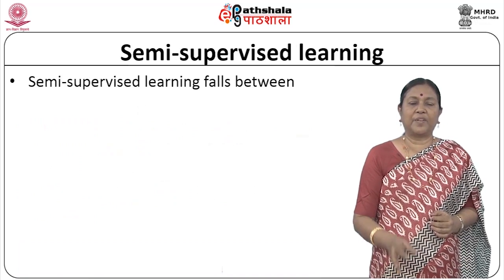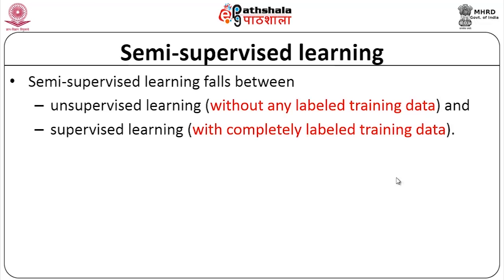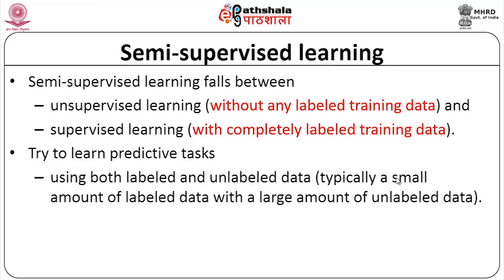Semi-supervised learning falls between unsupervised learning, where we have no labeled training data at all, and supervised learning, where we have completely labeled training data — meaning the training data is sufficient to determine the label. When we try to learn predictive tasks using both labeled and unlabeled data, where typically a small portion is labeled and a large amount is unlabeled, that is called semi-supervised learning.